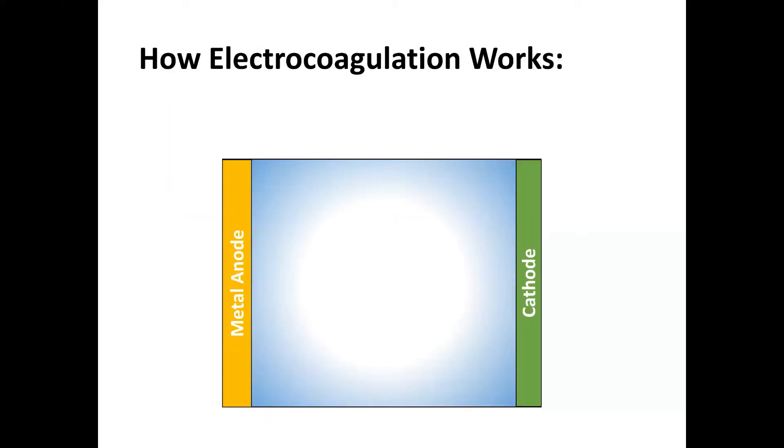This is how electrocoagulation works. You have metal anode and cathode here, and we apply electrical voltages to accelerate the electrochemical reactions on both anode and cathode.